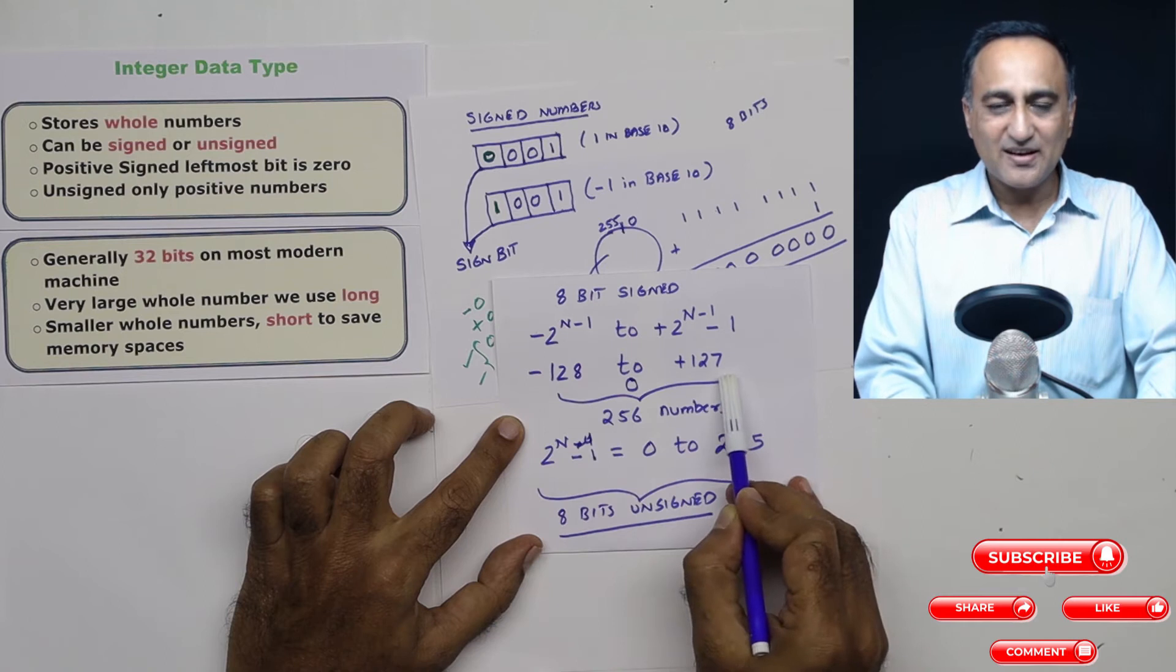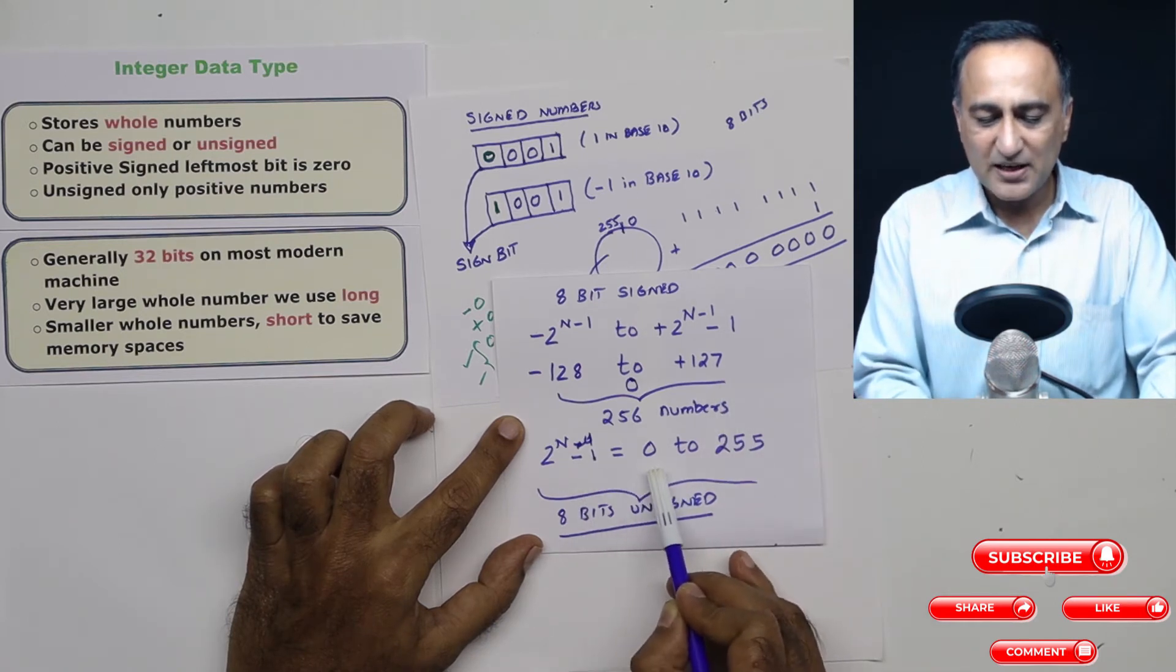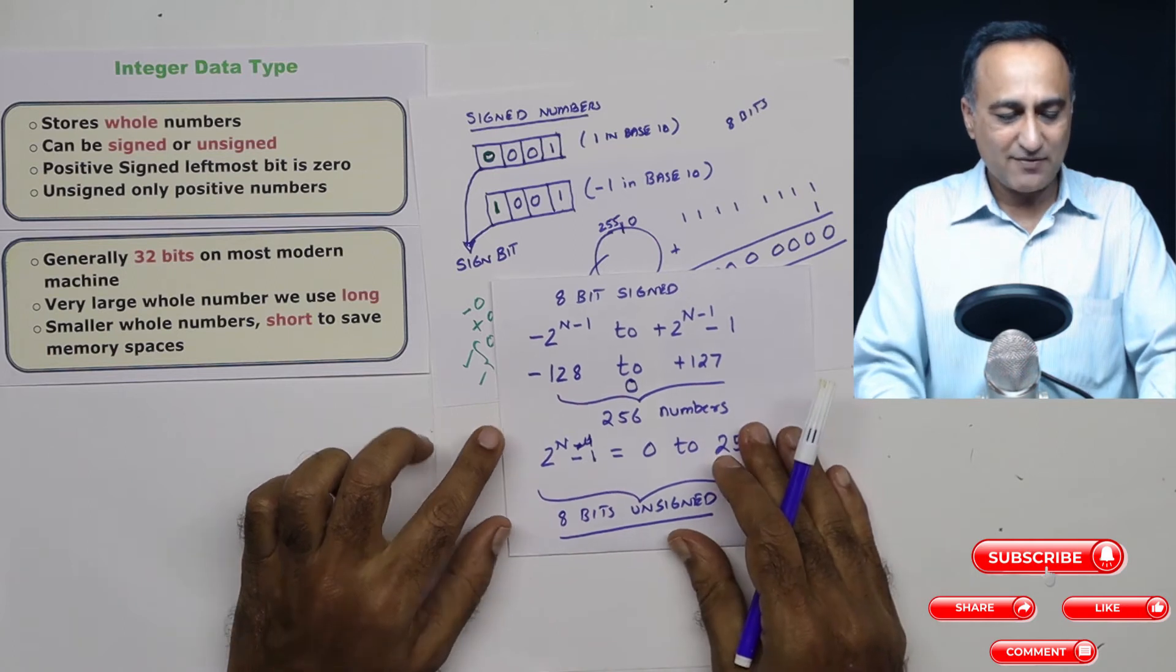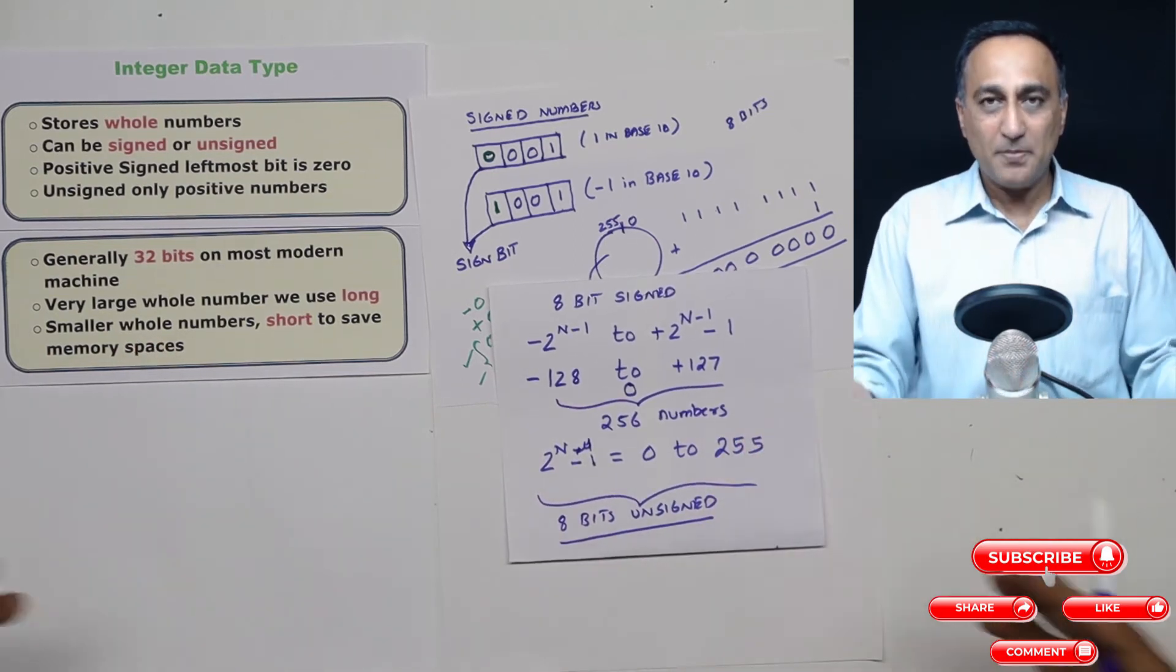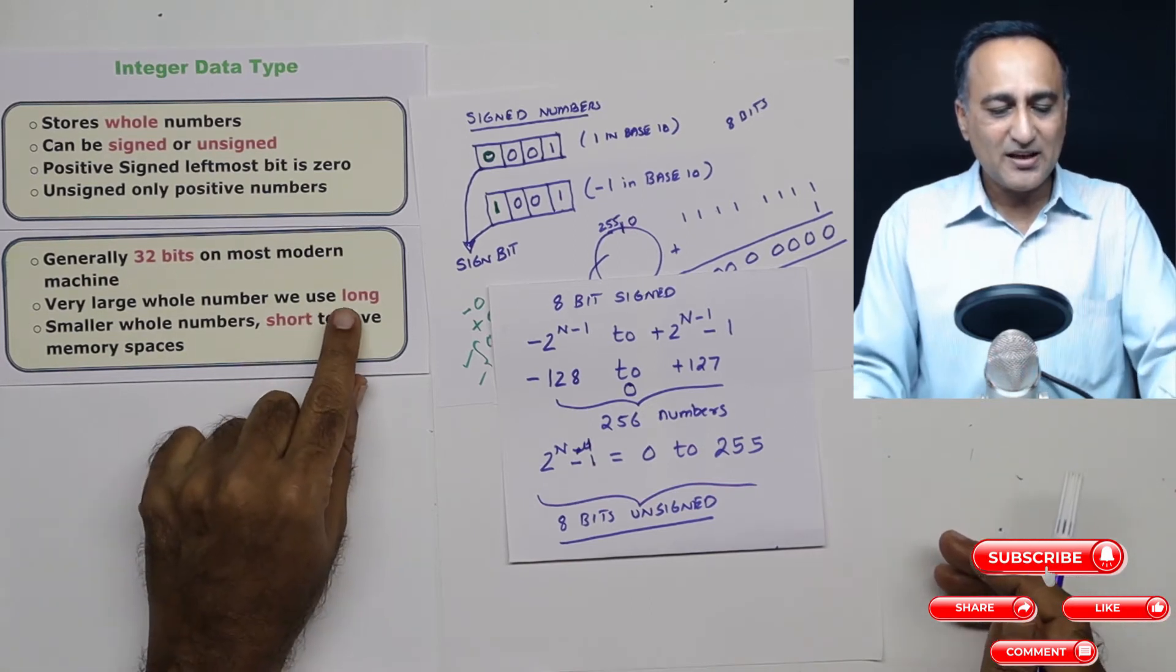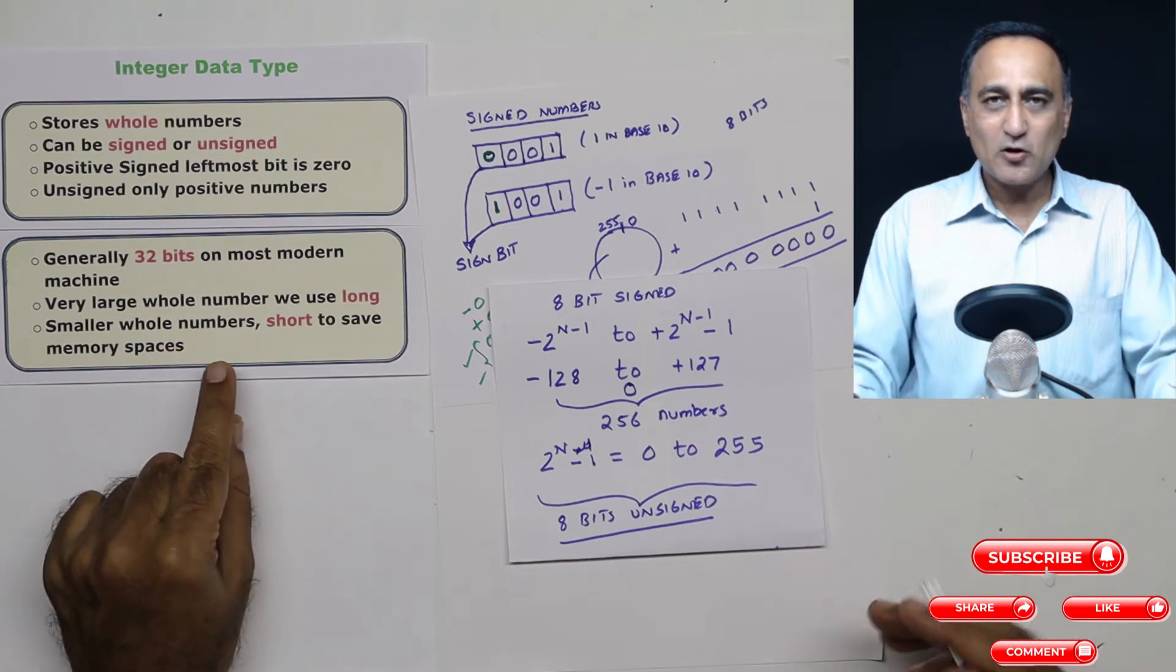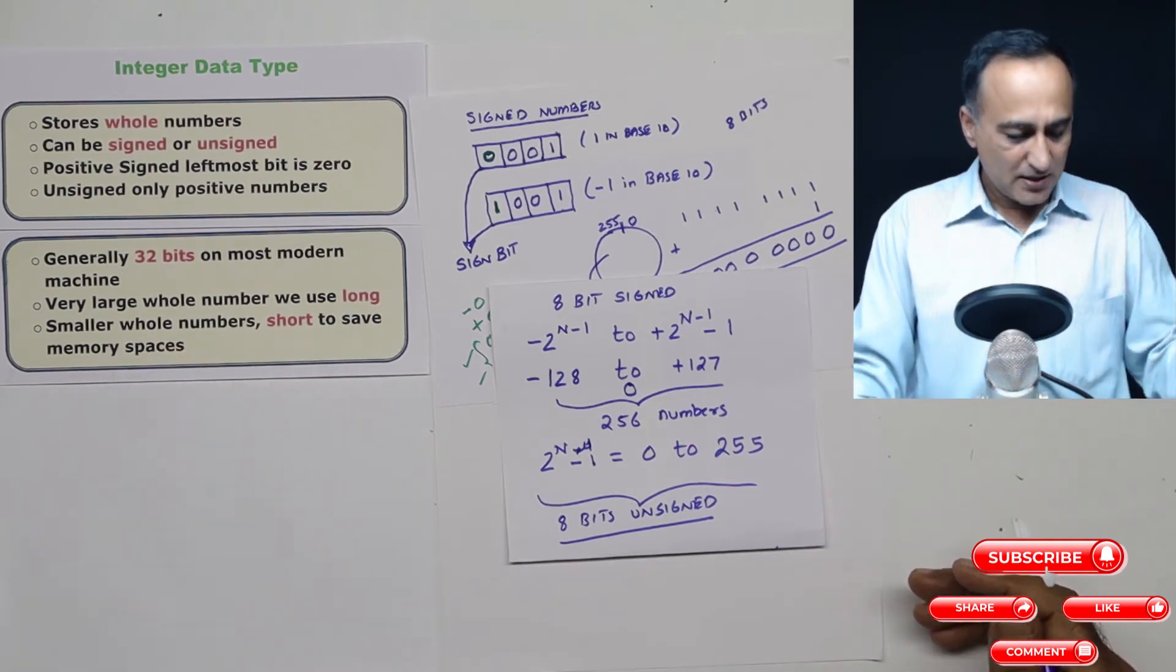This thing is known as the range of a number. The range of unsigned eight bit number is zero to 255. The range of eight bit signed is minus 128 to plus 127. Now sometimes you may have extremely large or big integers. Then instead of the normal int, you have something called as the long int. Similarly, you may have smaller integers like age of a person. So instead of having the normal int, you have something called as a short int to save memory space.